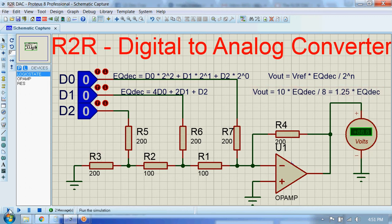Here D0 is MSB and D2 is LSB, so while reading we start from top to bottom. Now let's see when the binary input is 001.